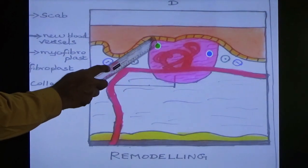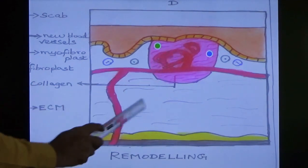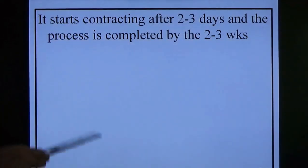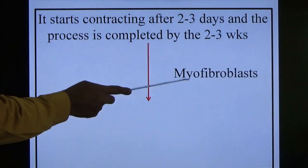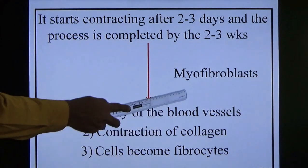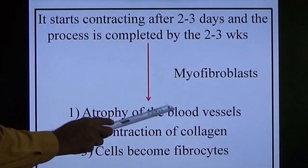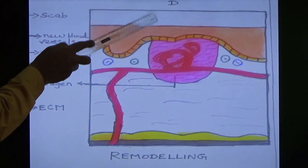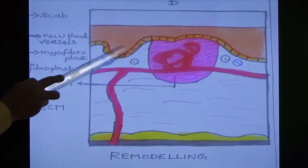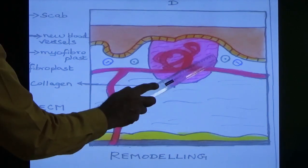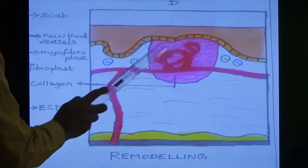Finally, once the healing is over: there is fibrosis, atrophy of blood vessels, contraction of collagen, and fibroblasts convert back to fibrocytes. Once healing is over, blood vessels atrophy, collagen contracts, and all fibroblasts become fibrocytes and move out. The injured tissue becomes healthy. Okay, that is all about granulation tissue formation — that is all about the process of repair.